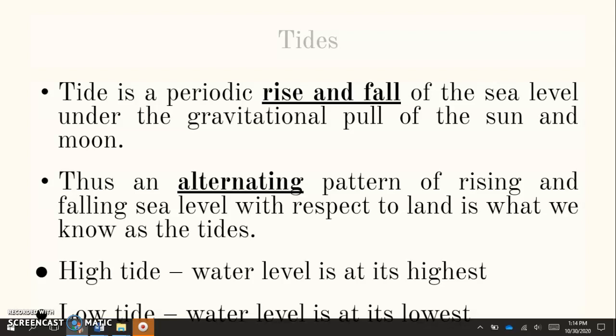So remember both the sun and the moon do impact the height of our tides, but the moon has a greater pull because the moon is closer to the earth. The sun is larger than the moon, but it's also further away. So the moon impacts us the most. Thus an alternating pattern of rising and falling sea level with respect to land is what we know as the tides.